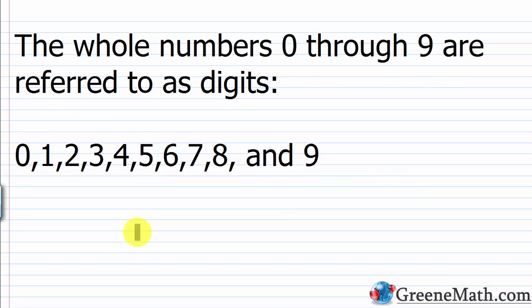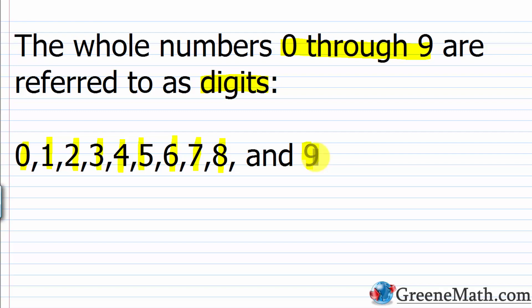Now let's talk about a group of whole numbers that we use to build numbers — these are known as the digits. The whole numbers 0 through 9 are referred to as digits. We have 0, 1, 2, 3, 4, 5, 6, 7, 8, and 9. It's basically just the first 10 whole numbers, and what's interesting is that our number system uses only these first 10 whole numbers to build any number we want.